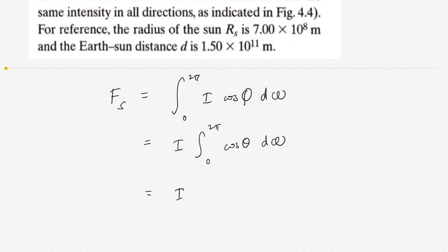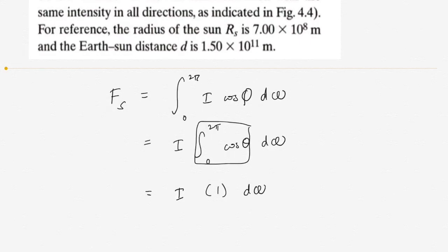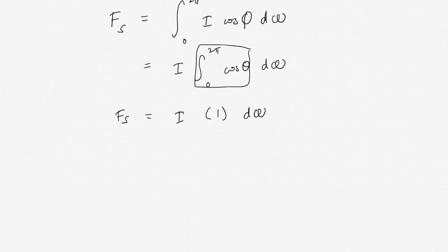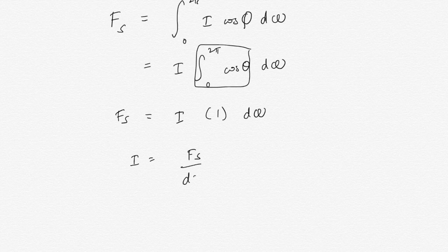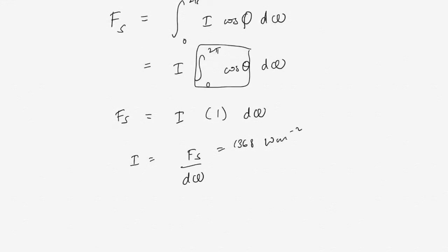So we can simplify this to just become 1, leaving us with a simplified expression. Now we want to calculate the solar intensity, so we rearrange the equation to make I the subject, which leaves us with dΩ to calculate. We have FS equals 1368 W/m², and we just need to calculate dΩ.